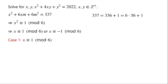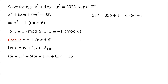Case 1: x is congruent to 1 modulo 6. So we let x equal 6t plus 1, where t is a non-negative integer. Substituting x equal 6t plus 1 in the equation, we have (6t plus 1) all squared plus 6 times (6t plus 1) times m plus 6m squared equals 337. Expanding (6t plus 1) squared gives 36t squared plus 12t plus 1. Moving 1 to the right side gives 337 minus 1 equals 336.